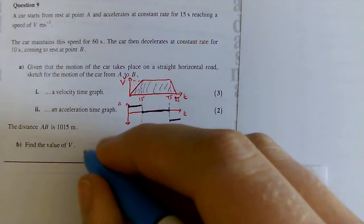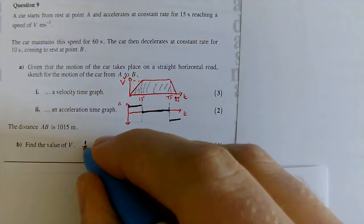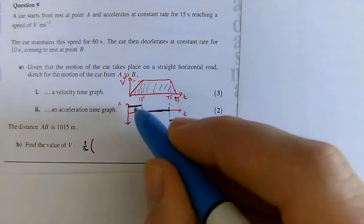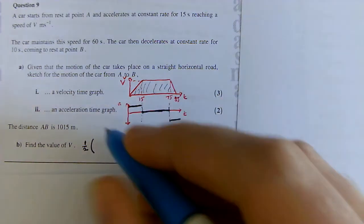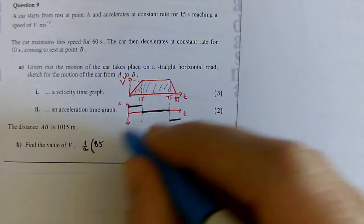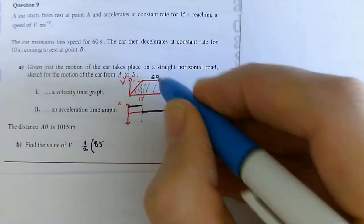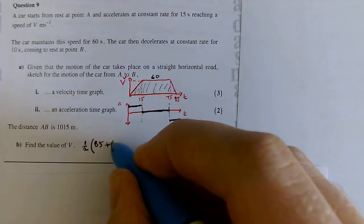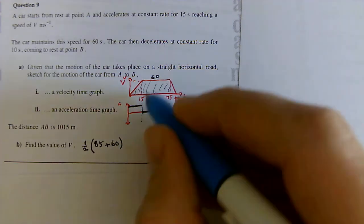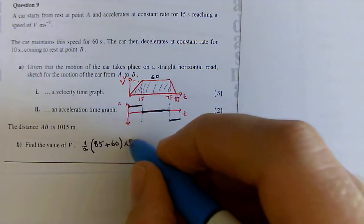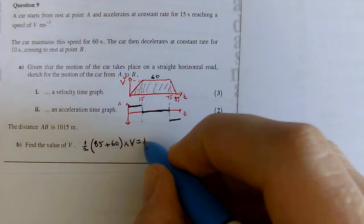The formula for the area of the trapezium is half (a plus b) times h. Well, the base is going to be 85, and the top is just going to be from 15 to 75, which is 60. Half of (85 plus 60) times V is equal to 1015.